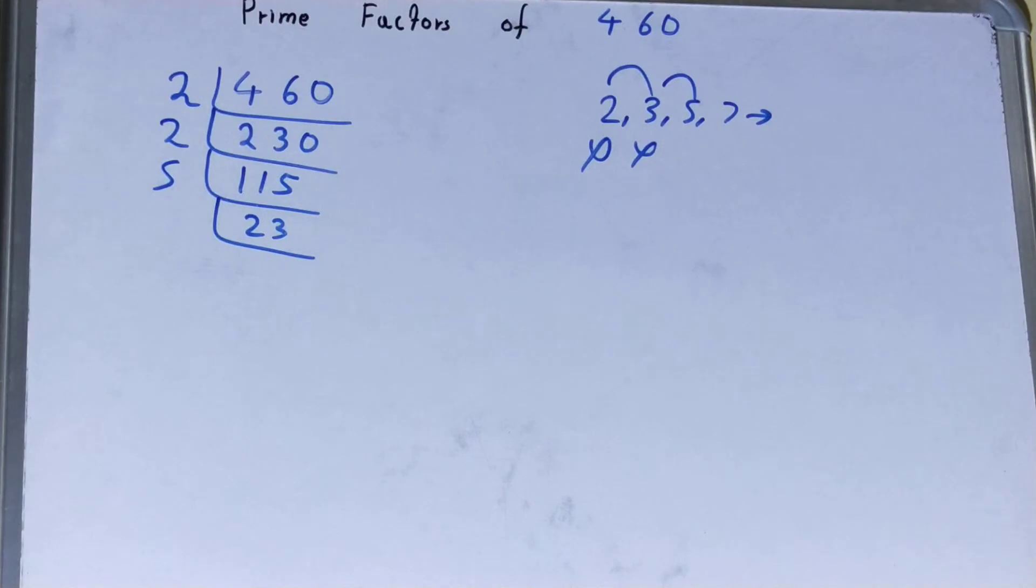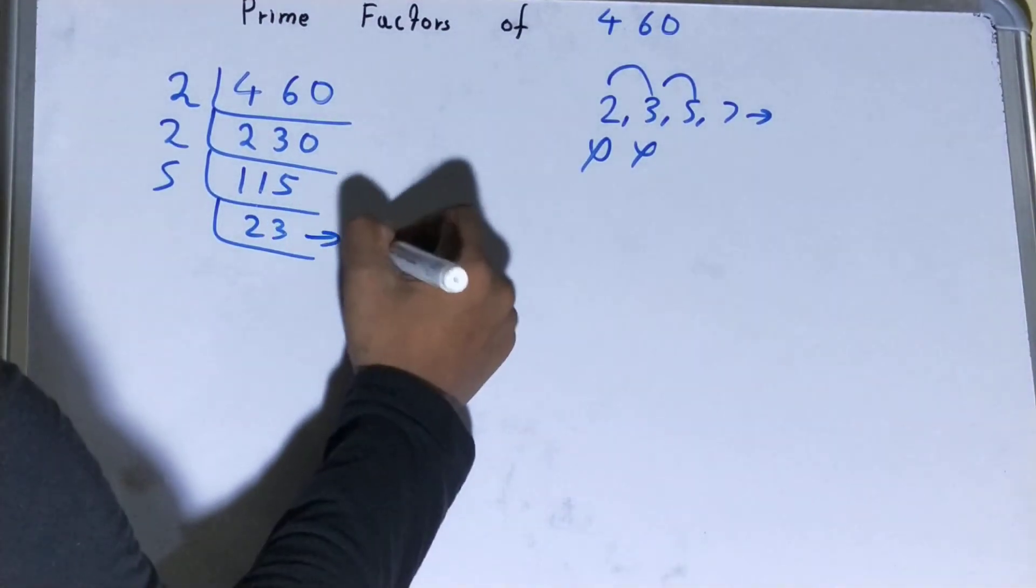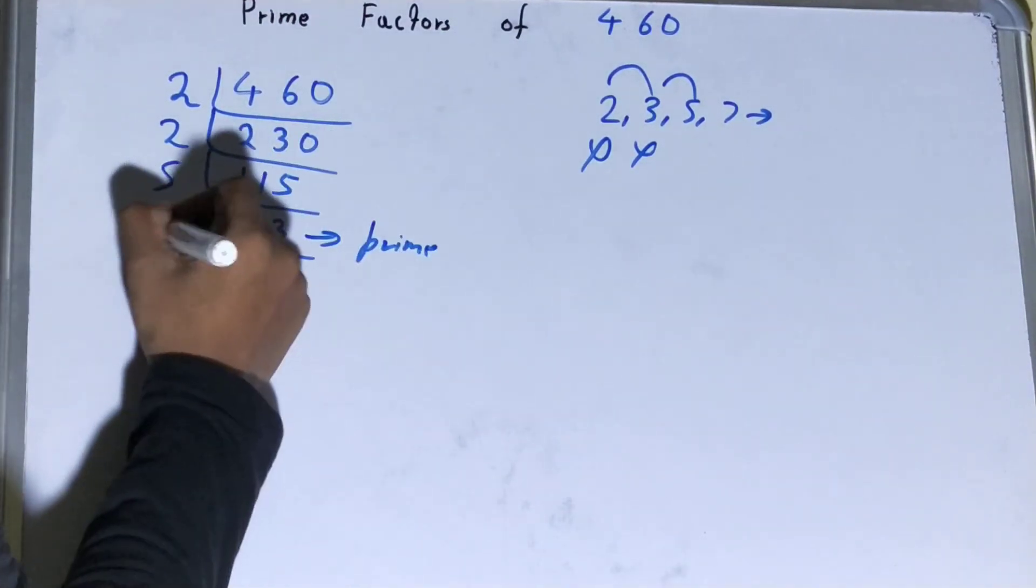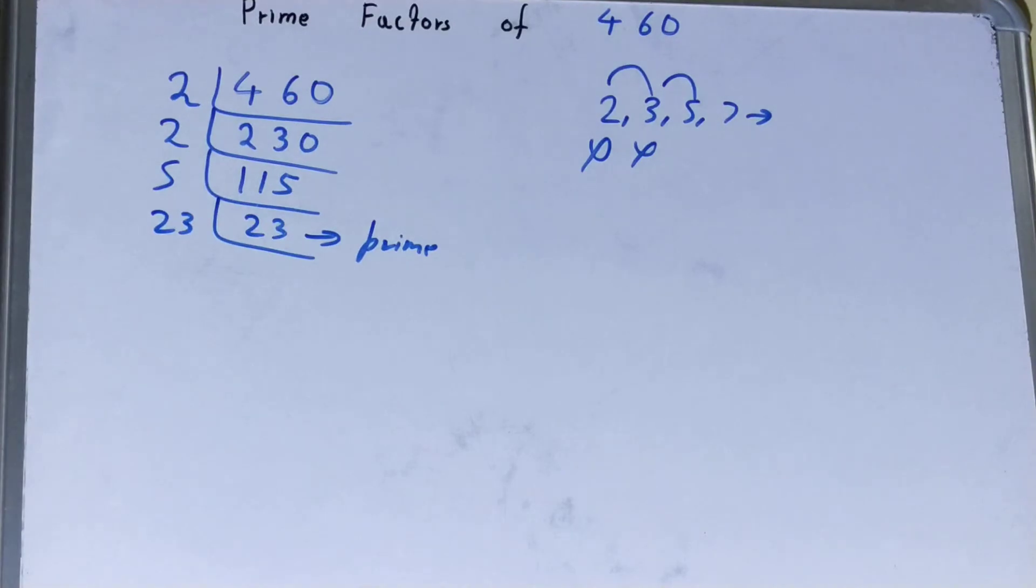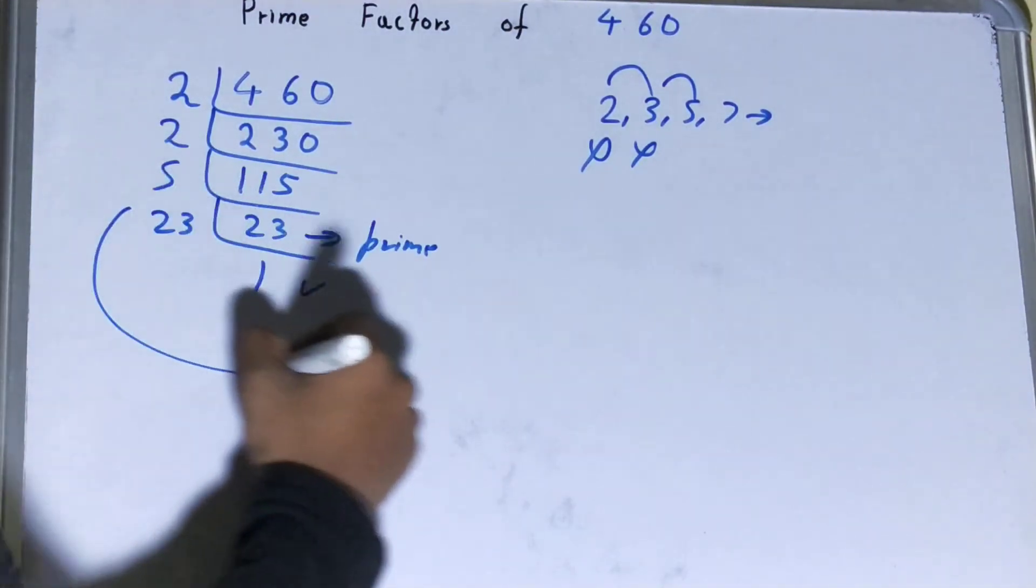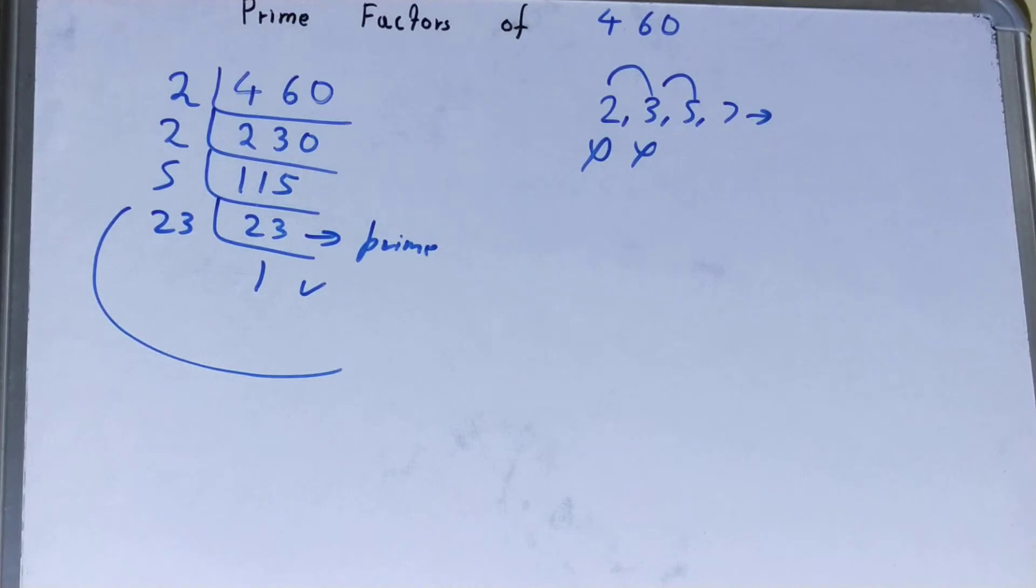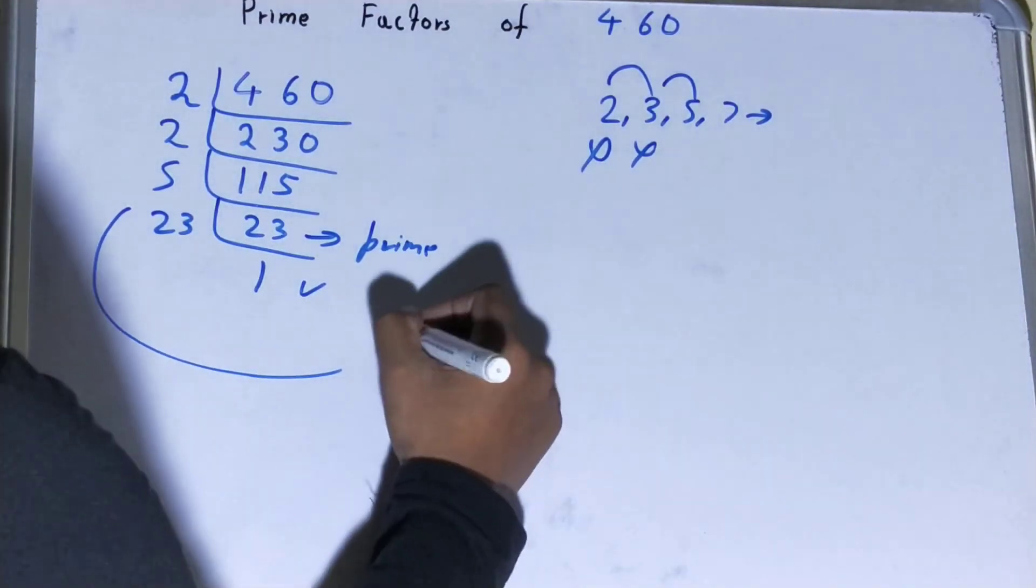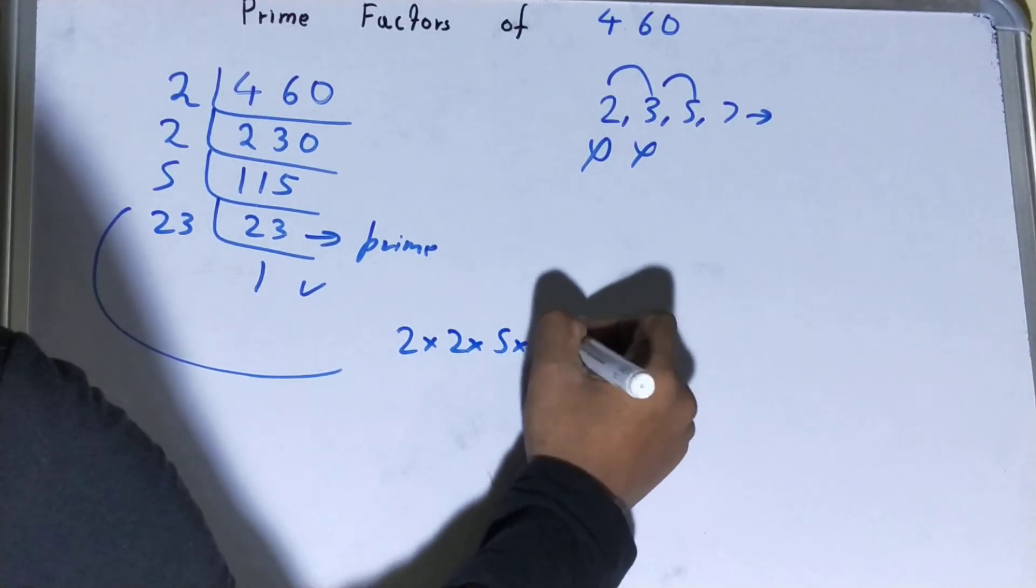Now 23 is further not divisible by 5 and on that it is also a prime number. So it is only divisible by itself. So to divide it, you need to place it on the left hand side and when you do so, you'll be left with 1 and once you're left with 1, the work is done and whatever you have on the left hand side will be the prime factors of the number 460 that is 2 cross 2 cross 5 cross 23.